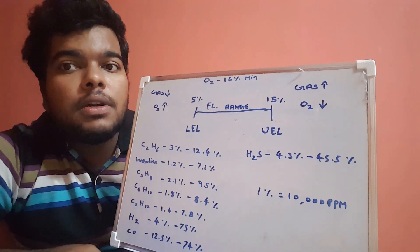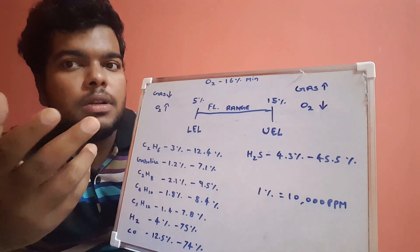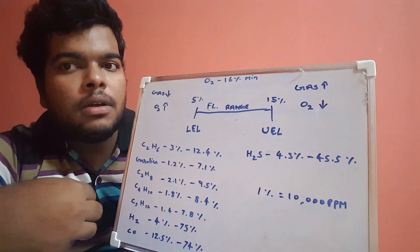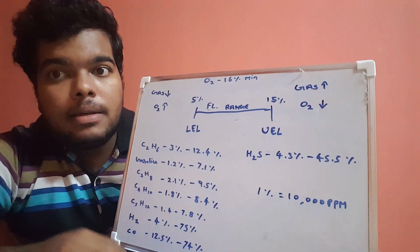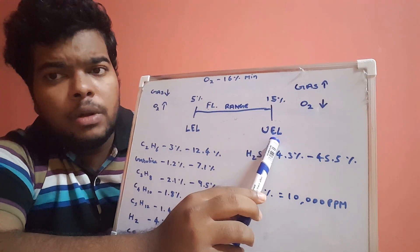When it reaches the 5 percentage, definitely the alarm will go on and we will have three kinds of alarm indication: light, sound, and vibration. Up to the UEL value, it will measure.